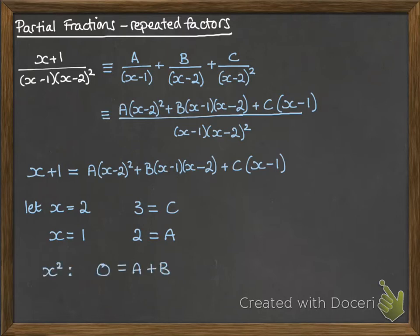And then we're going to look at the coefficients of x squared. So on the left-hand side, we've got none, and on the right-hand side, we've got A and B. And since we already know A, we can work out B.